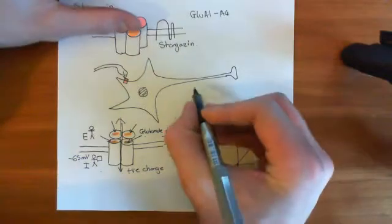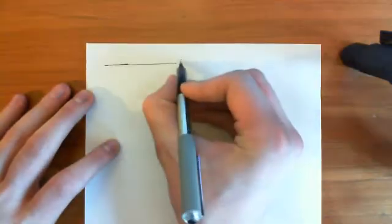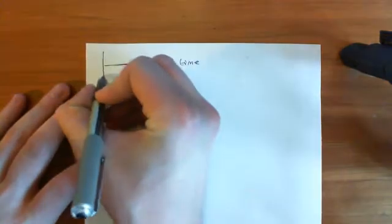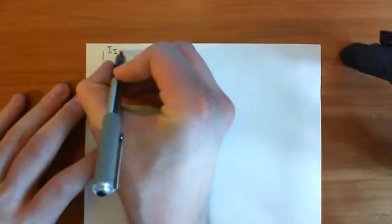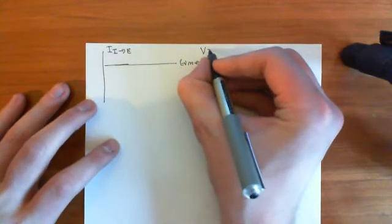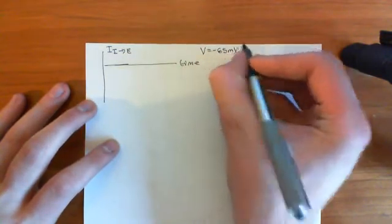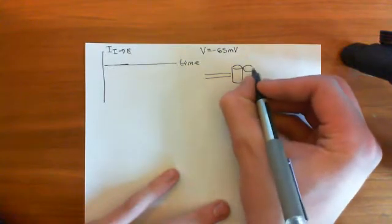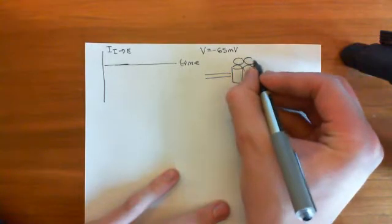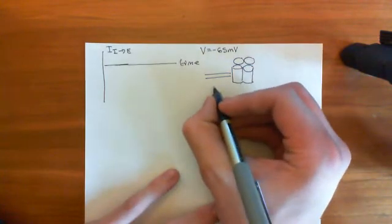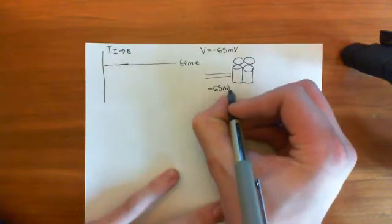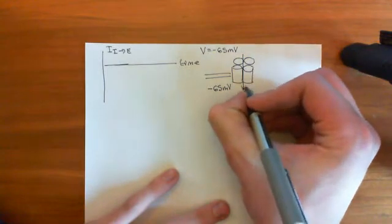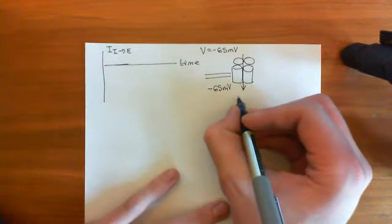If we draw a little graph, in fact we'll draw it on the other side, where we plot against time, so as time evolves, we're going to plot the current moving, let's say, from intracellular to extracellular. And we're going to assume that the voltage is equal to negative 65 millivolts. At that voltage, if I just draw a little cell membrane here and put in an AMPA receptor, that means that the electrical potential of the intracellular compartment is lower than the electrical potential of the extracellular compartment, and it's lower by 65 millivolts.